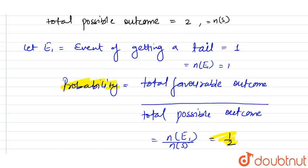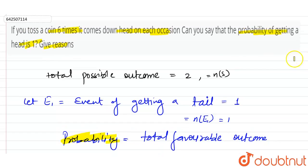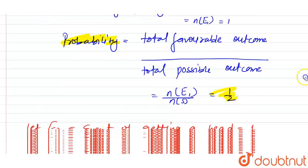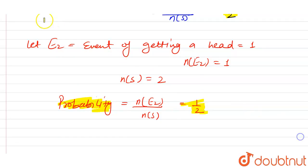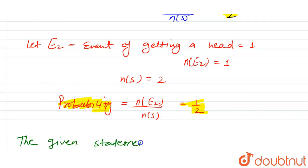Whether we toss a coin one time or six times, we always get a probability of 1/2 for head or tail. So the given statement that the probability of getting a head is 1 is wrong.